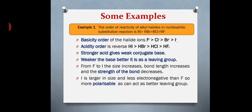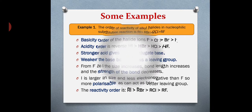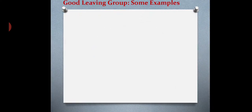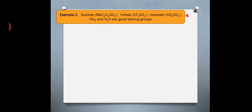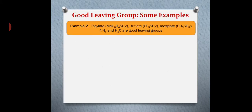Therefore, taking into account all these factors, the reactivity order of alkyl halides is RI > RBr > RCl > RF. Let's see another example: sulfonates like tosylates, triflates, and mesylates are good leaving groups.